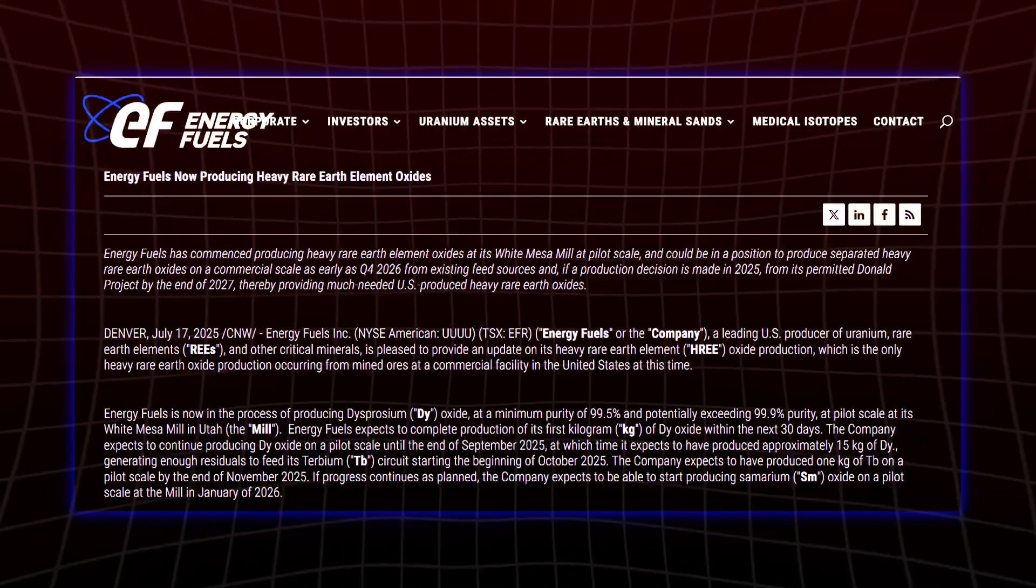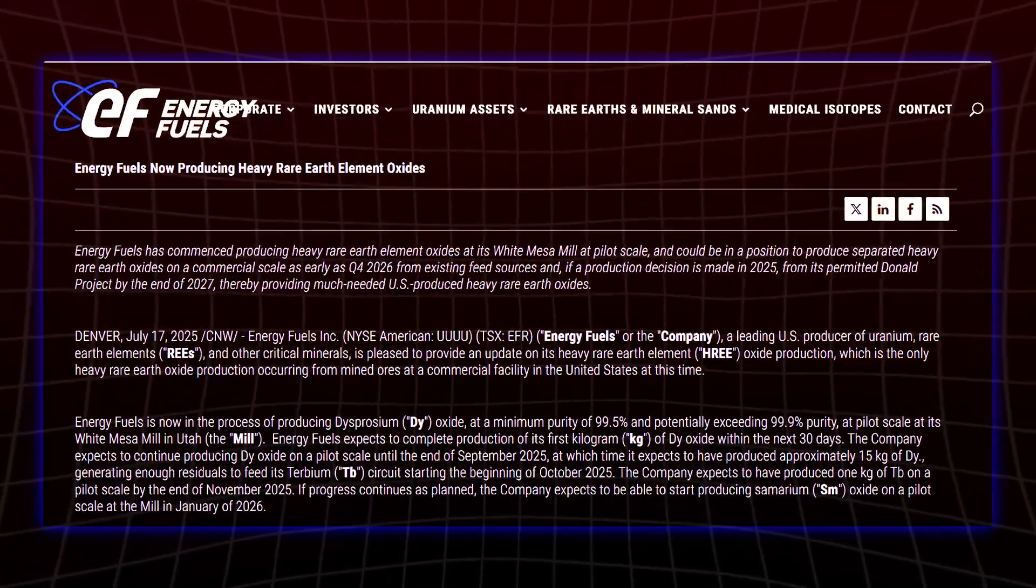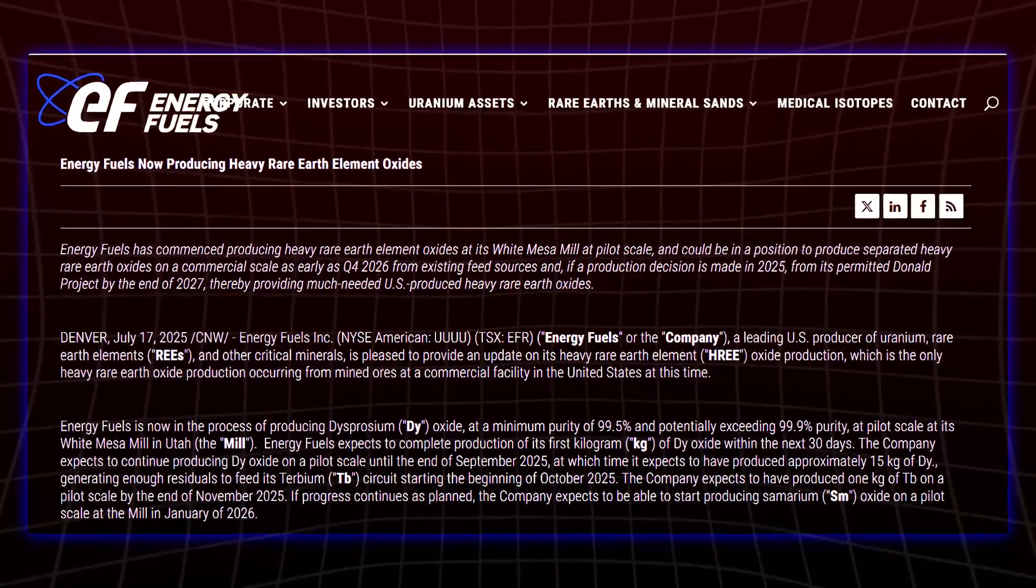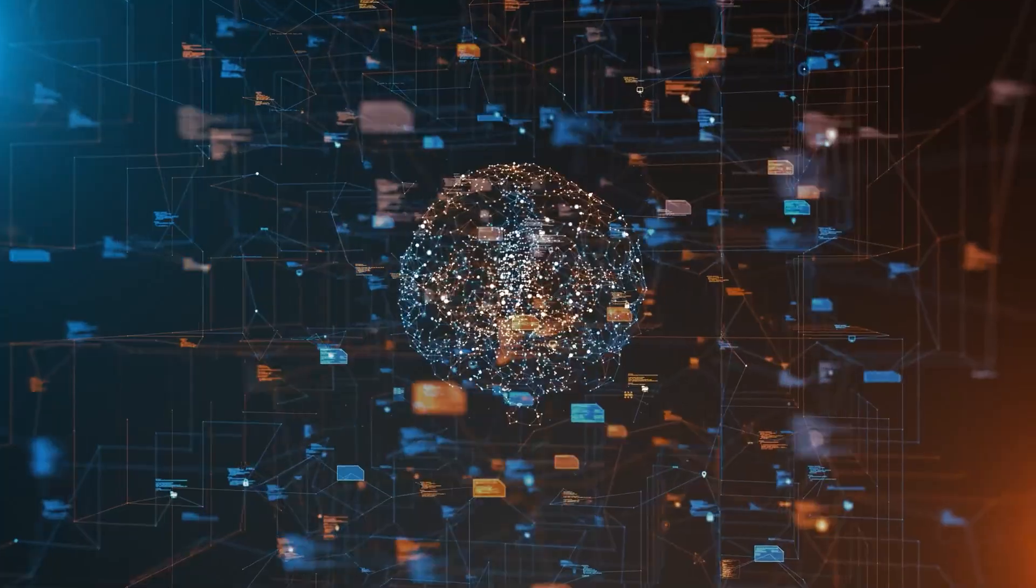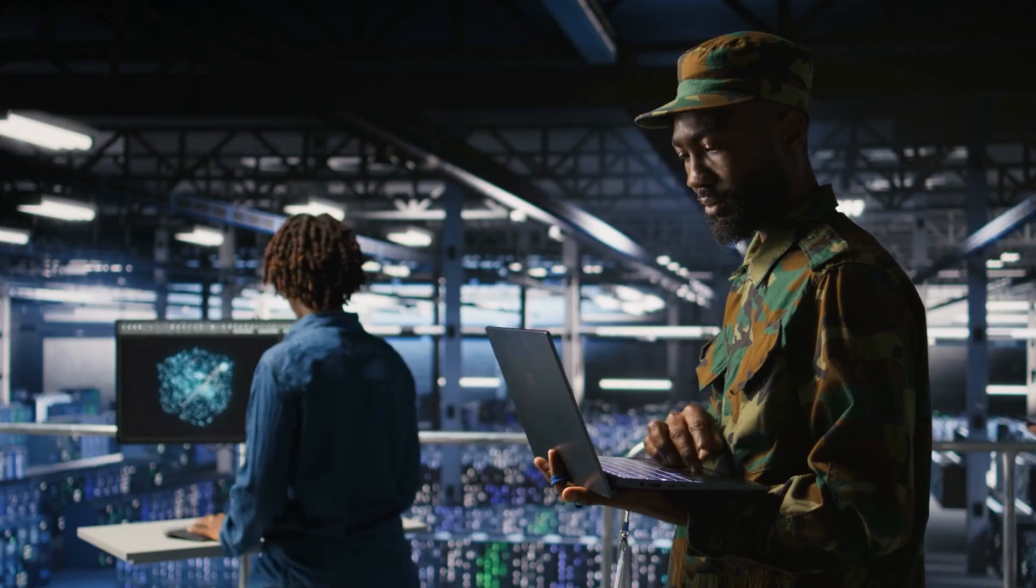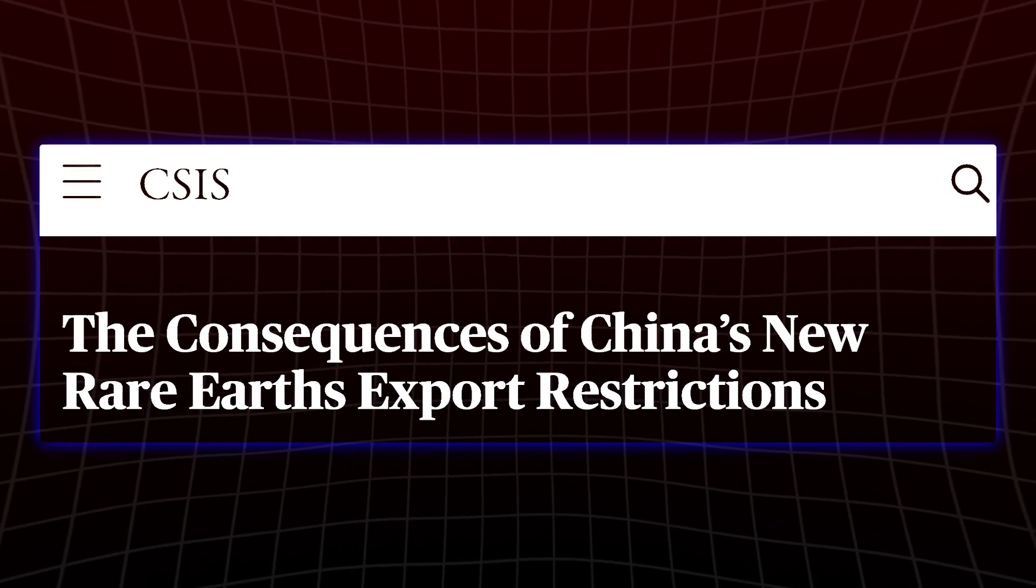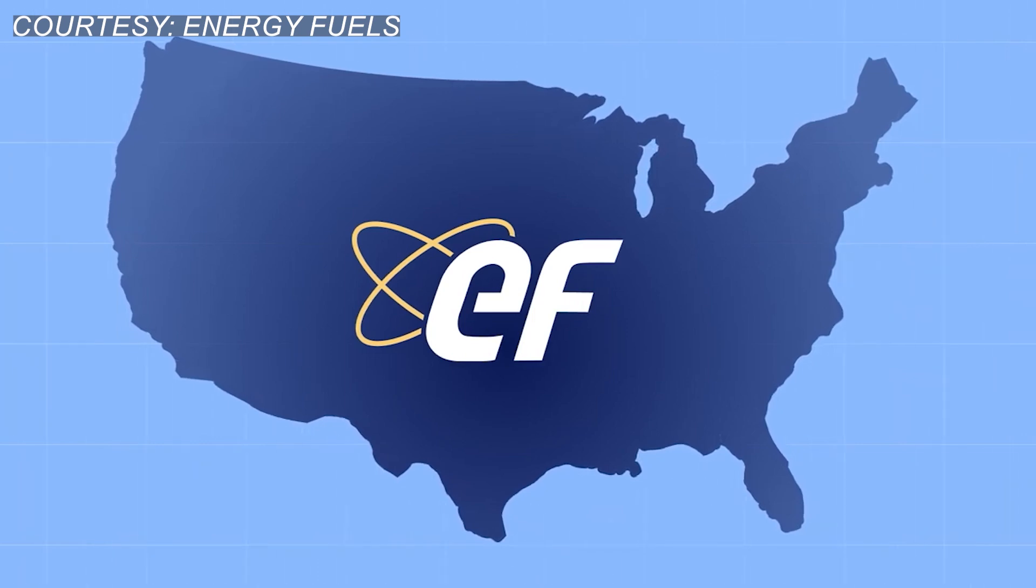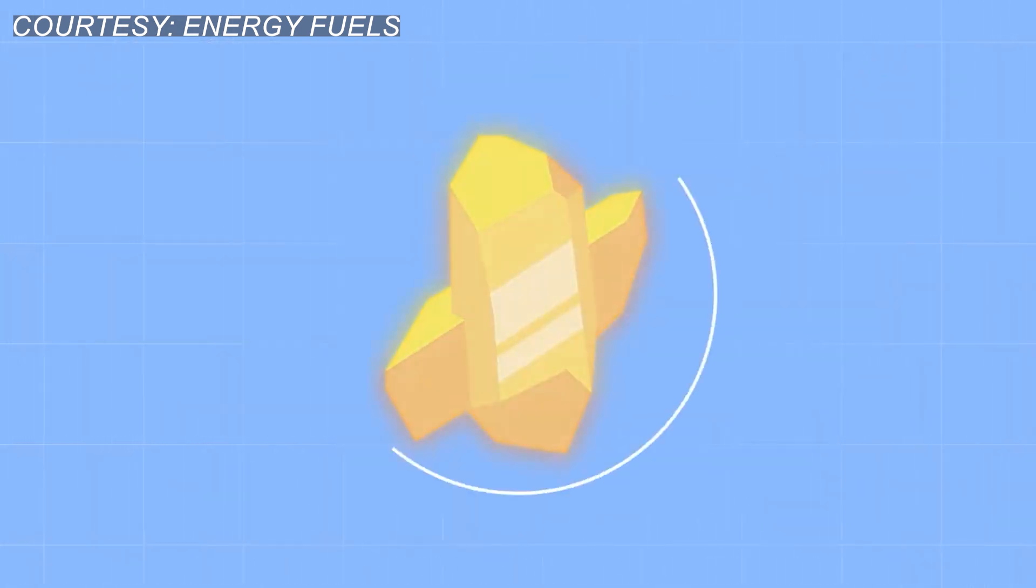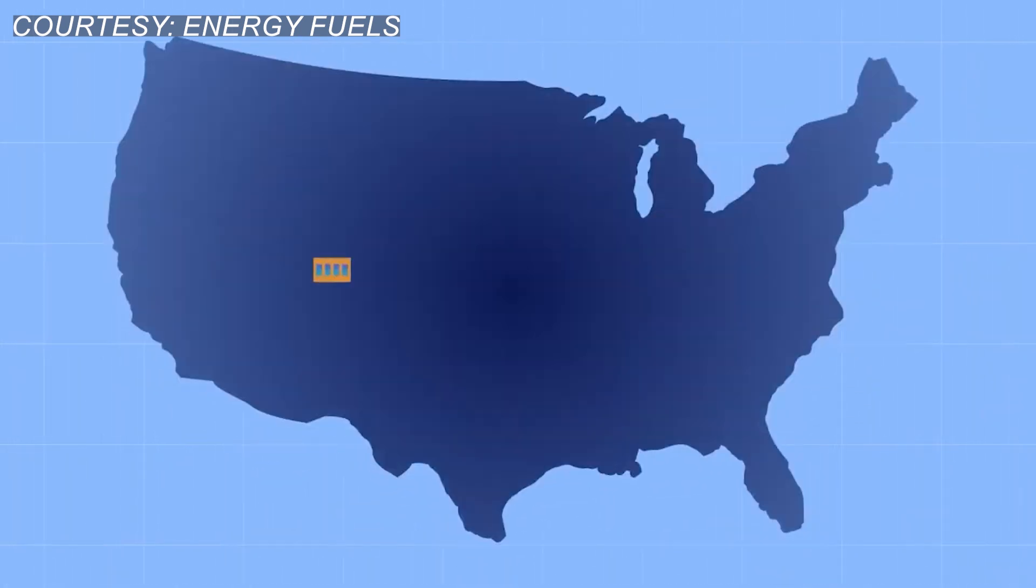In late July, Energy Fuels announced it had successfully begun producing dysprosium oxide, a key rare earth metal used in high-performance magnets essential for AI servers, EV motors, and advanced military hardware. With global supply chains tightening, especially after China imposed new export restrictions on critical metals, Energy Fuels is now one of the only U.S. companies producing heavy rare earths through commercial ore processing. That's no small feat.